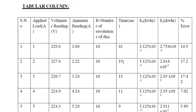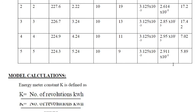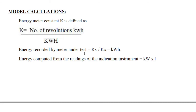From this data we can calculate energy consumed and the percentage error. The meter constant is given by the number of revolutions per kilowatt hour — here it is 3200 revolutions per kilowatt hour. The energy recorded is calculated using the corresponding equation, and the percentage error is found using those expressions.